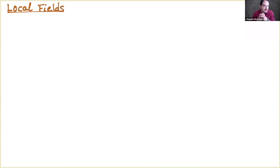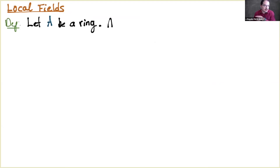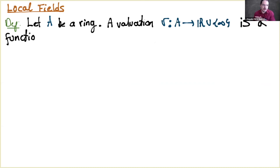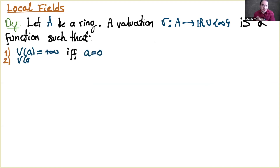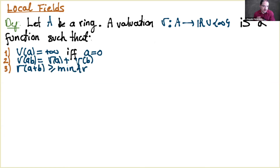Now we pass very quickly to a review of local fields, as they are very important. I would like to define precisely what is a p-adic field. Let's start with a local field. We consider a ring A and a valuation of this ring — exactly as Miriam defined — but now for any ring, not necessarily a field. A valuation is a function with all the expected properties.